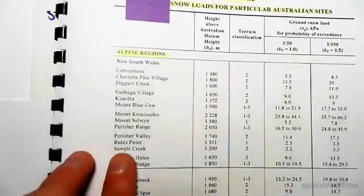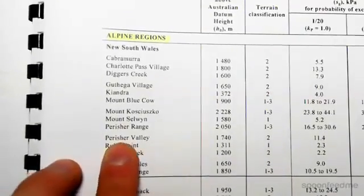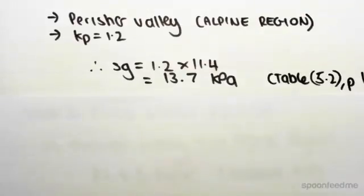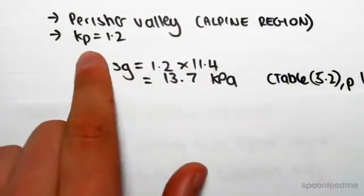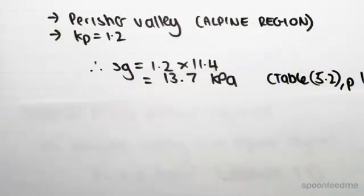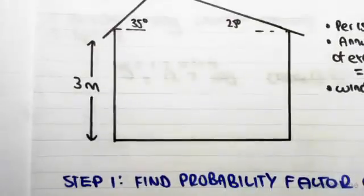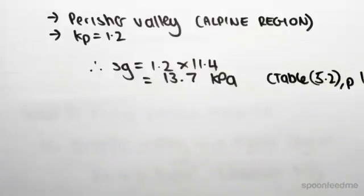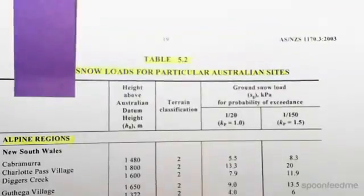We're given the ground snow loads for particular Australian sites. Now we need to find our place. We're told it was Perisher Valley. If I zoom in for you, you can see Perisher Valley here. It's in an alpine region, so I've just noted that. Alpine region. We also know kp is 1.2, we just found that before. kp is 1.2, so we can then find our ground snow load. So if you look in this column here...